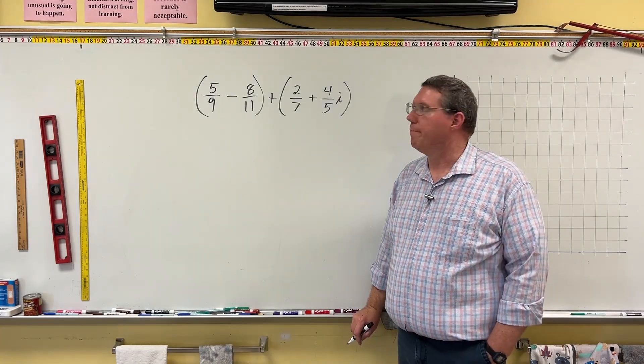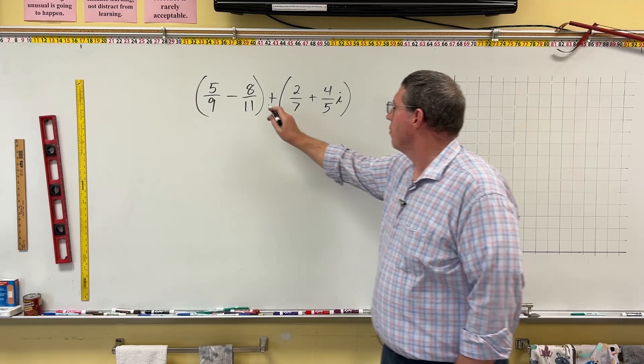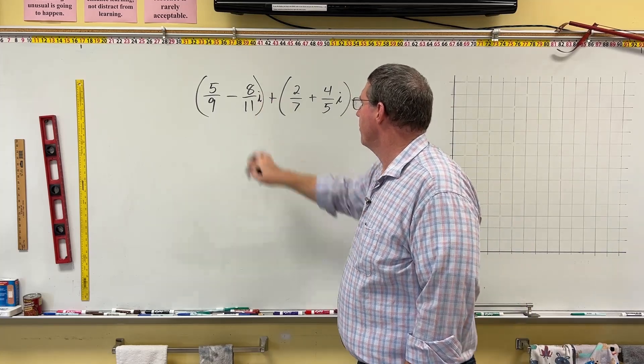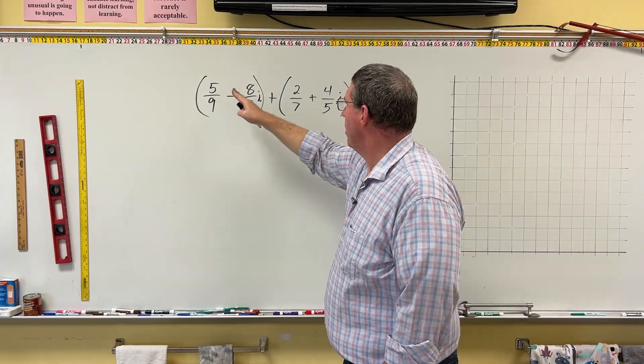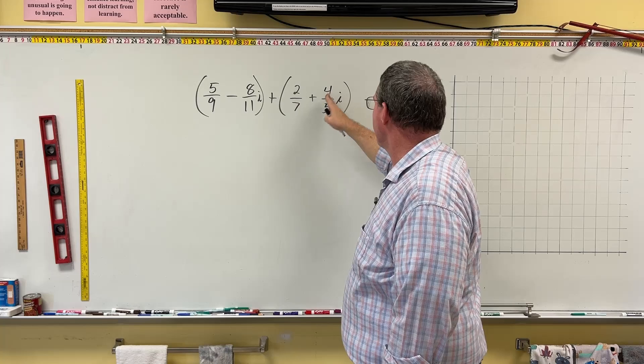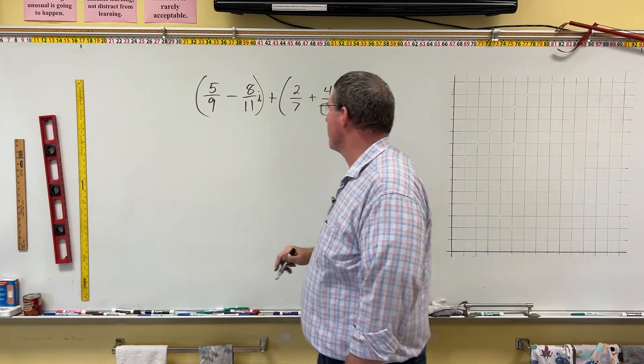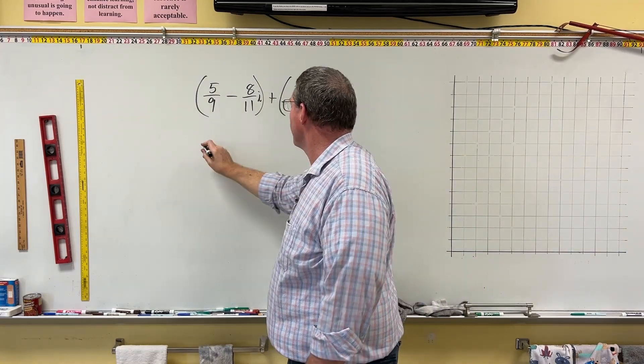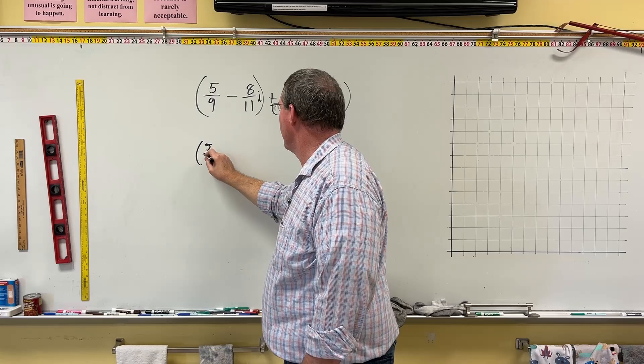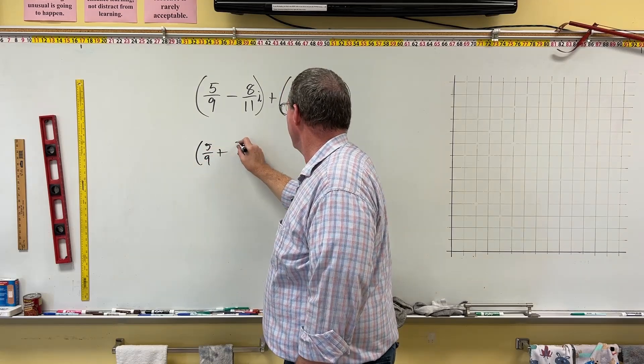All right, let's try one more. Here we have an addition. Oh, there's supposed to be an i here, there we go. So we've got a complex number here, a plus bi, a plus bi, so they're both complex numbers. So we're going to add the real parts. We're going to do 5 ninths, plus 2 sevenths,